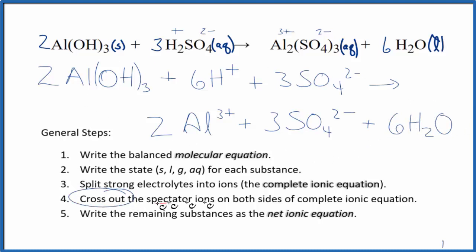Now we can cross out these spectator ions. They're on both sides of the complete ionic equation. So they haven't changed. We're not really interested in them. The only thing that I see that's the same in the reactants and the products, these 3 sulfate ions here. So I'm going to cross those out. And that gives me the net ionic equation.